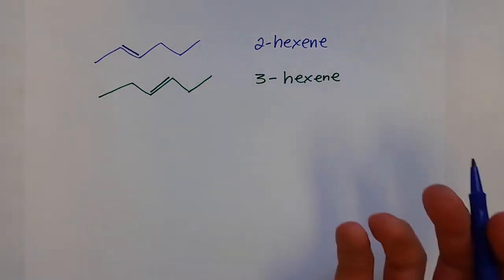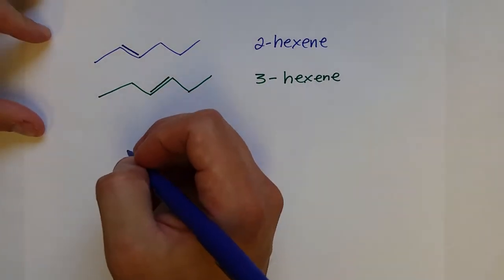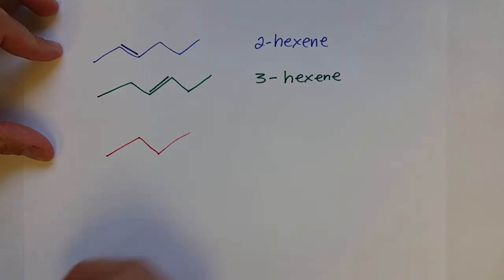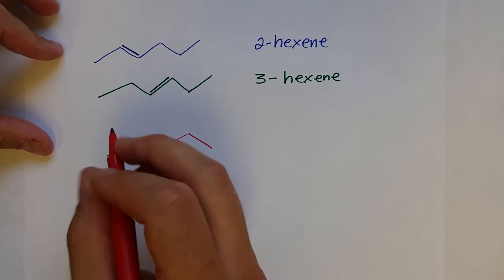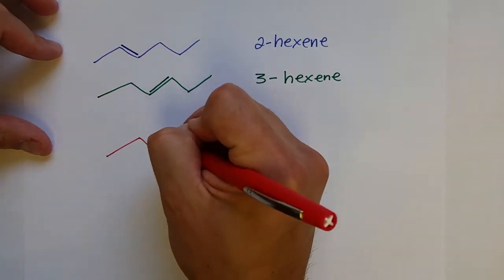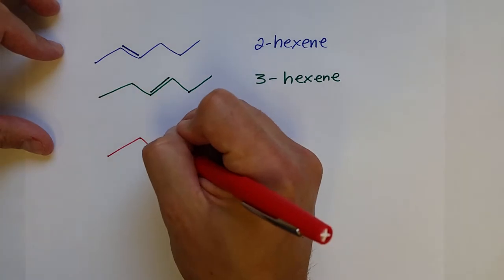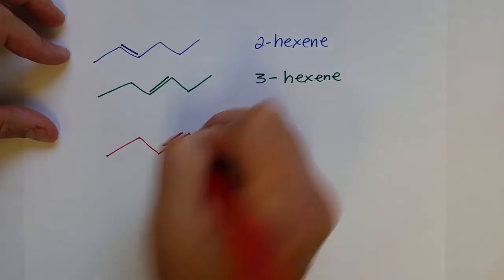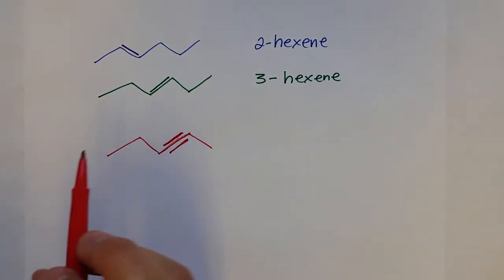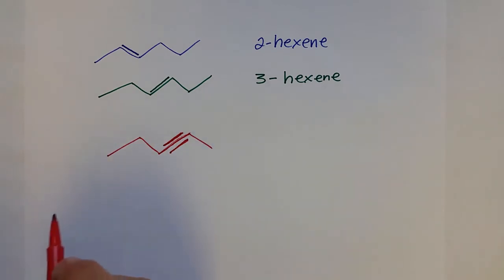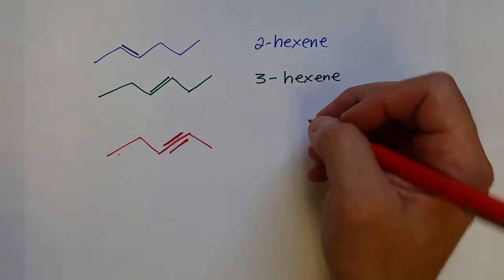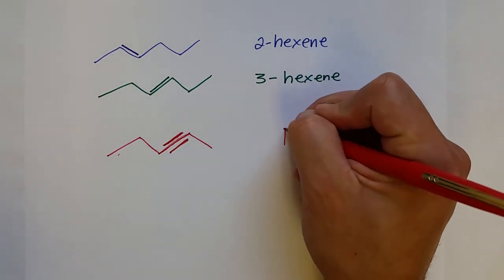The same naming approach applies to alkynes. We can draw five carbons with a triple bond between two of them — that gives us pentyne. Counting the carbons: one, two, three, four, five. The triple bond position needs to be specified.